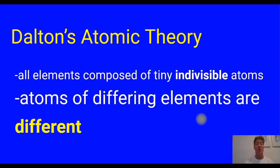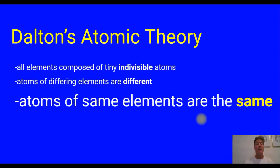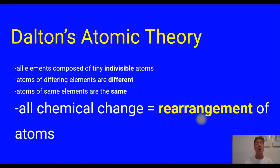All the atoms of one particular element were all identical to each other. So all of the atoms of helium, for example, would be the same, and all the atoms of carbon would be the same, but they'd be different from each other. The fourth thing is that all chemical change is simply the rearrangement of atoms. Atoms aren't transformed from one kind to another — they're simply rearranged, and that rearrangement is what explains chemical change.